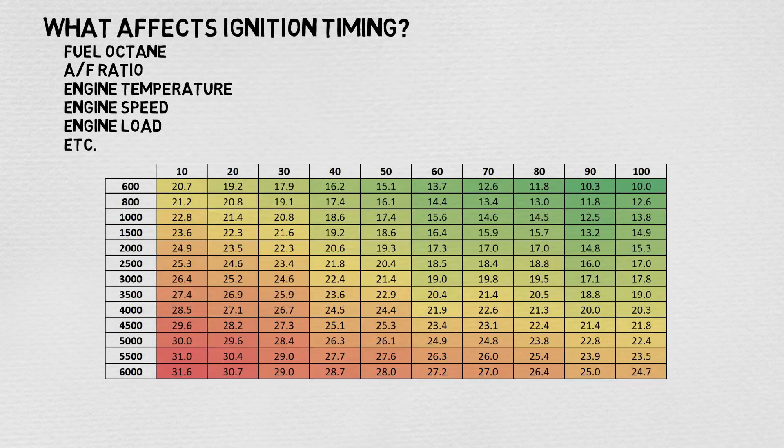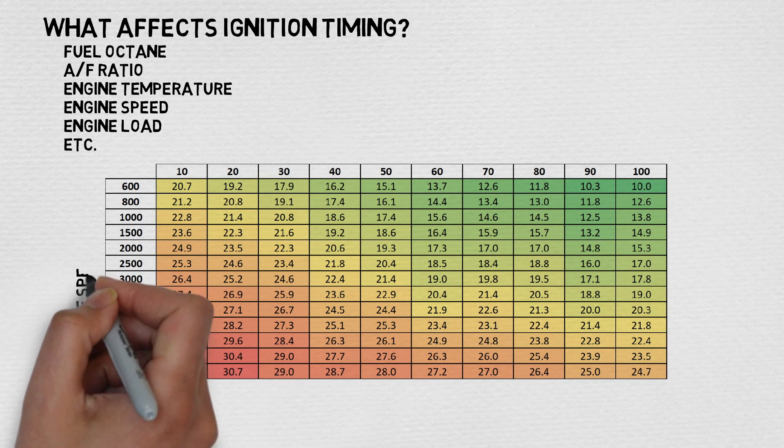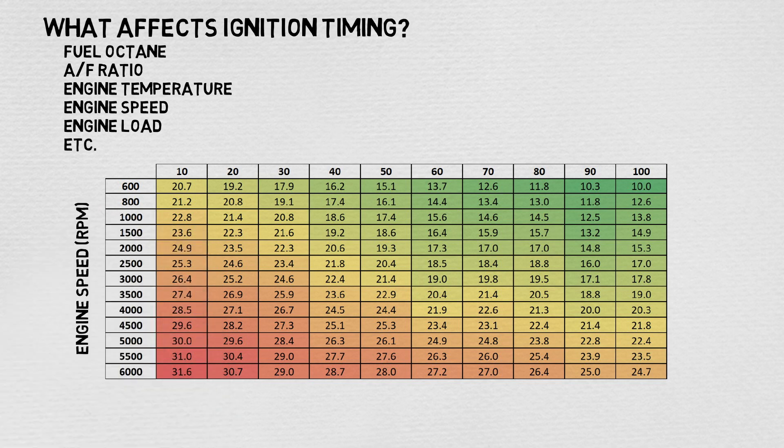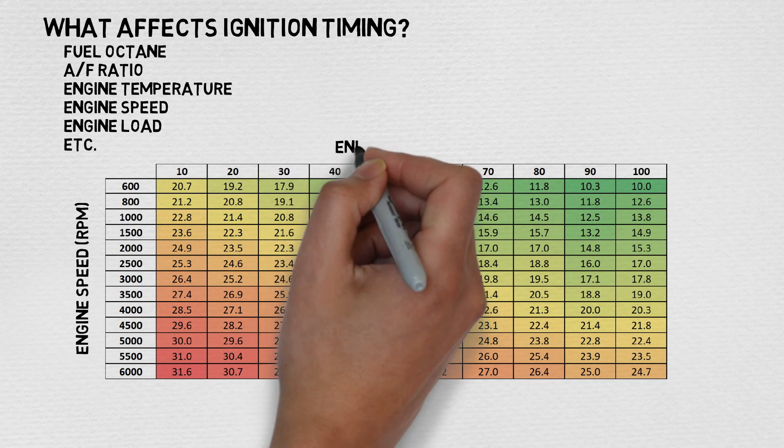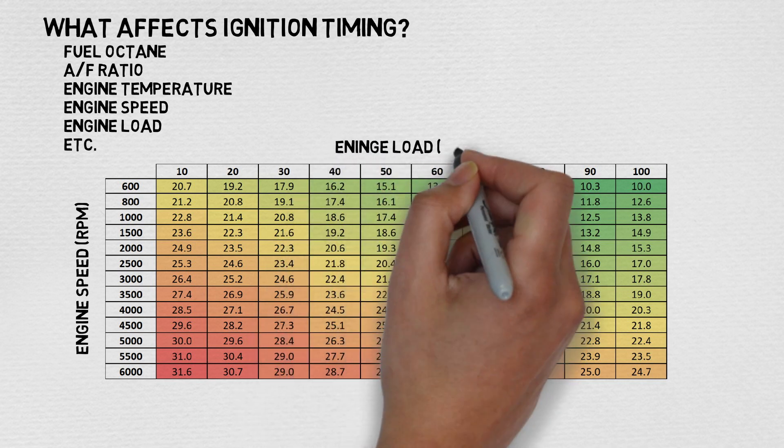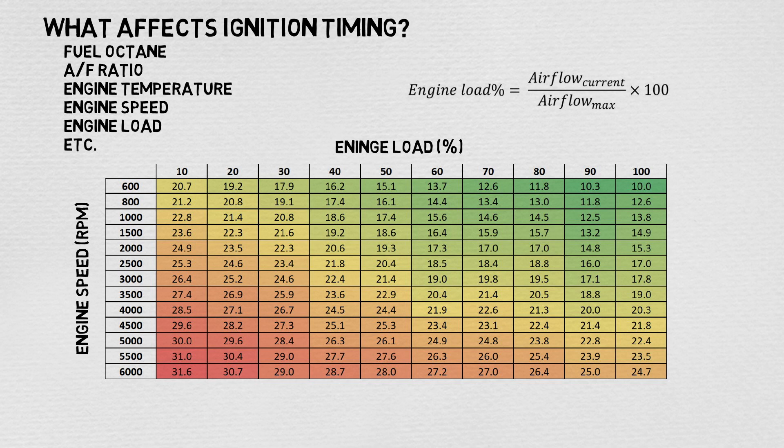So let's take a look at this sample ignition timing map. On the X axis, we have engine speed in revolutions per minute. On the Y axis, we have engine load denoting the percentage of measured intake air compared to the theoretical maximum. Right away, we notice that there is a wide range of values, but typically all engines regardless of make and model follow the same trend.